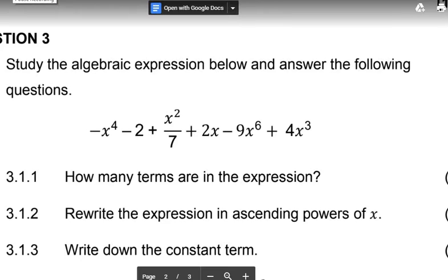So if we look at negative x to the power 4 minus 2 plus x squared over 7 plus 2x minus 9x to the power 6 plus 4x cubed, the highest degree of this expression is 6 because the highest exponent is x to the power 6. So we've got this expression or this term minus 9x to the power 6 and that is the term with the highest degree. So when they ask you what is the highest degree of this expression, you will say that the answer is 6.